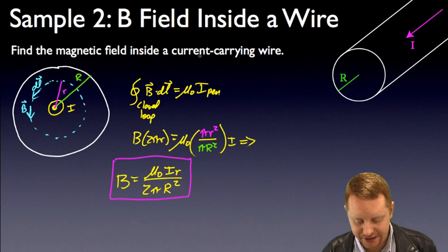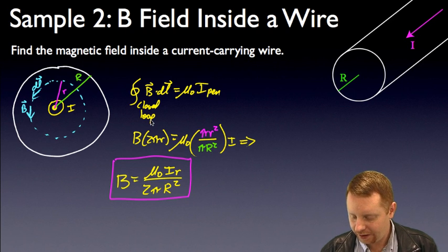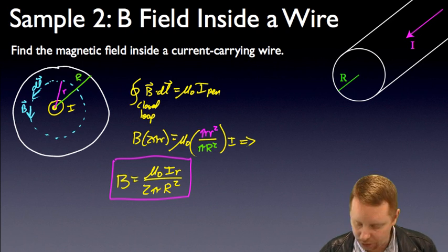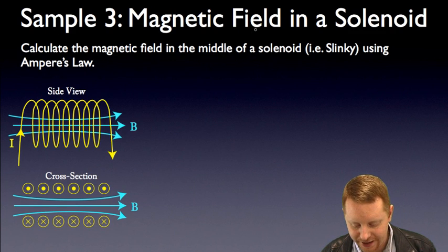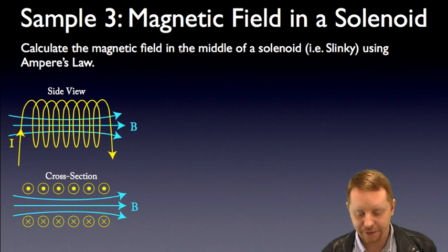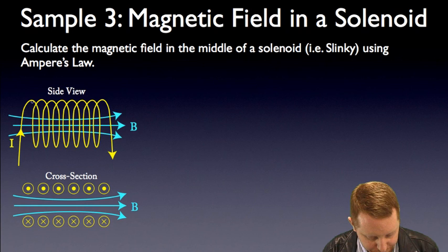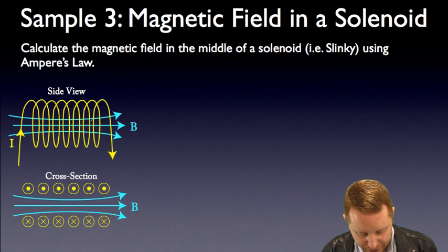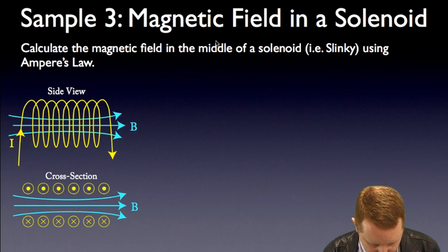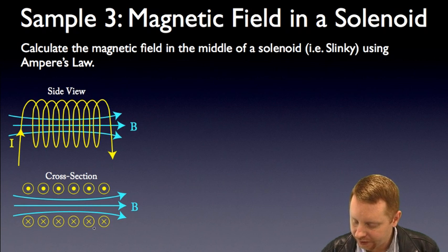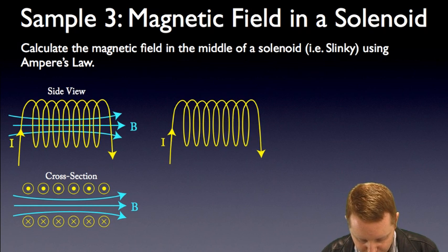There's the magnetic field inside the current carrying wire. Let's try one more. Let's see if we can't find the magnetic field in a solenoid. Calculate the magnetic field in the middle of a solenoid, or a slinky, using Ampere's law. From a side view, if this is our current loop here in yellow, we're looking for the magnetic field inside it. Or a cross section here, as the current is coming toward us up above and into the plane down below, we're looking for the magnetic field inside that loop. We're going to assume there is no magnetic field outside.